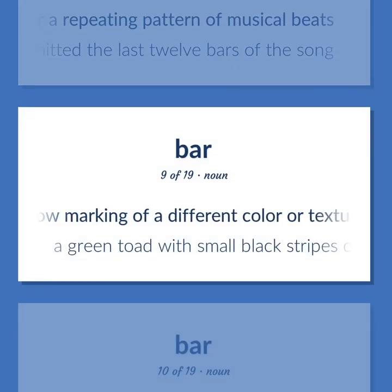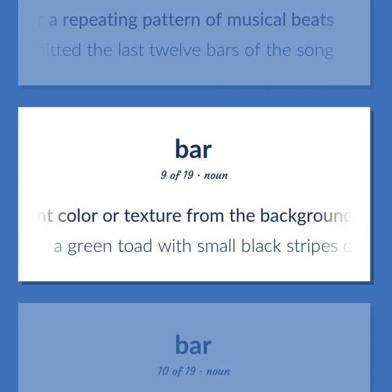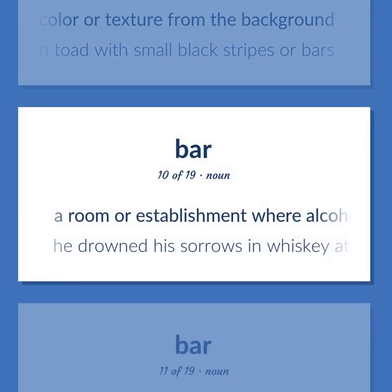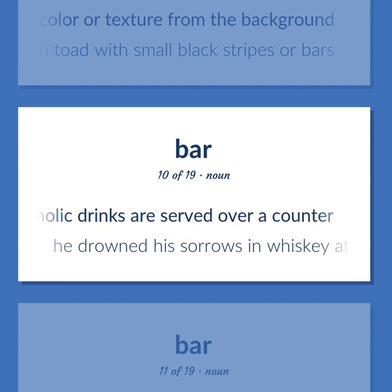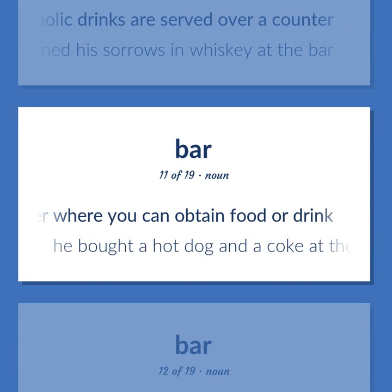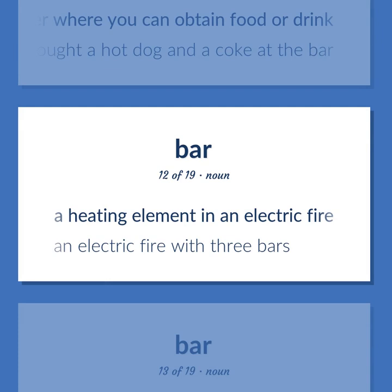A narrow marking of a different color or texture from the background — a green toad with small black stripes or bars. A room or establishment where alcoholic drinks are served over a counter — he drowned his sorrows in whiskey at the bar. A counter where you can obtain food or drink — he bought a hot dog and a Coke at the bar.